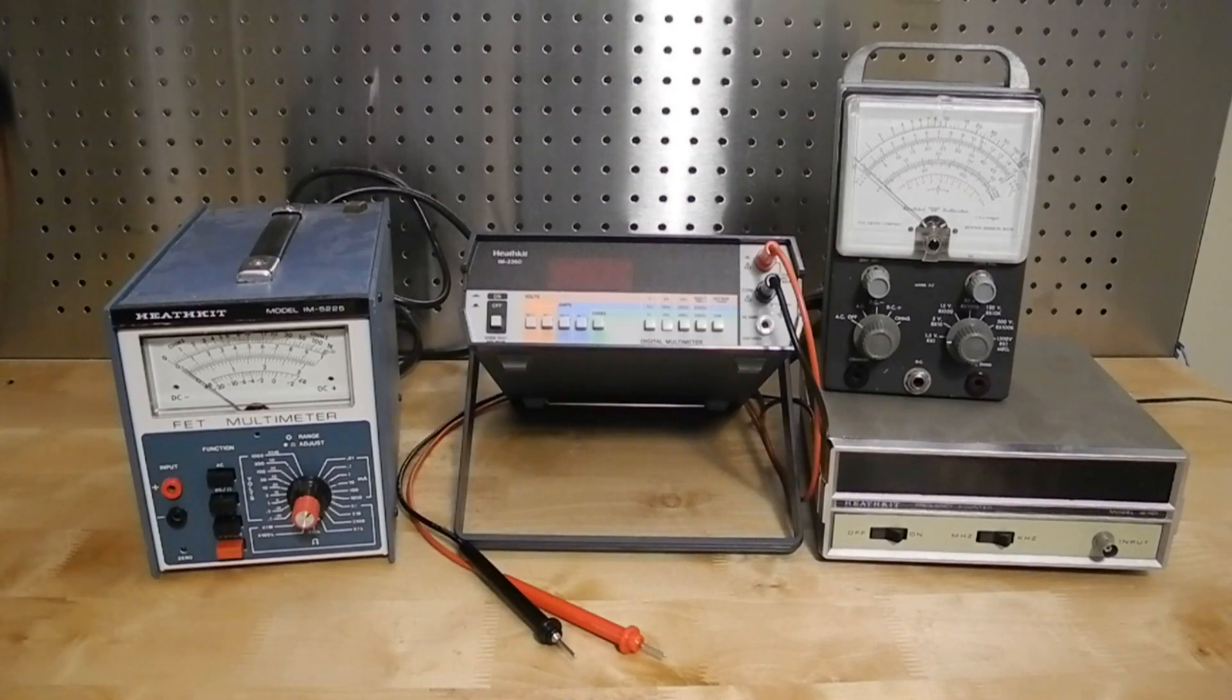As technology advanced, Heathkit introduced new models. By the early 1980s, state-of-the-art multimeters were solid-state and featured digital displays.